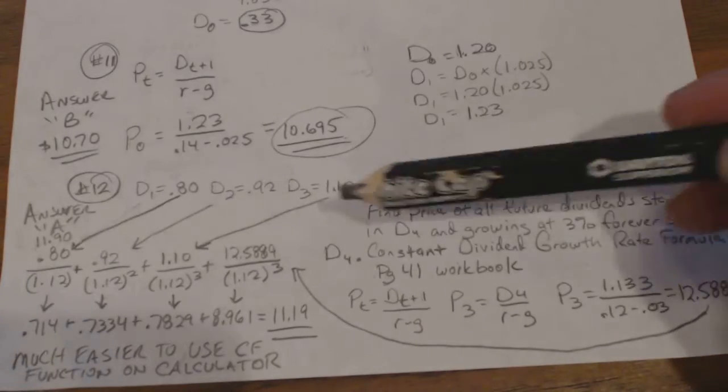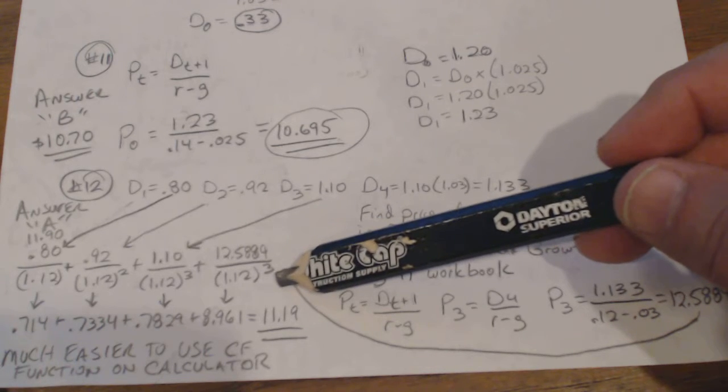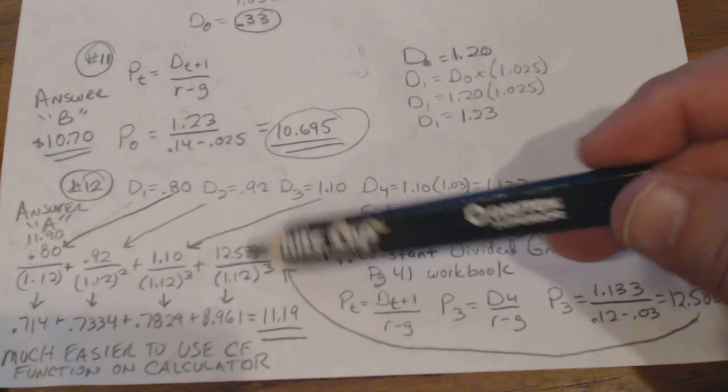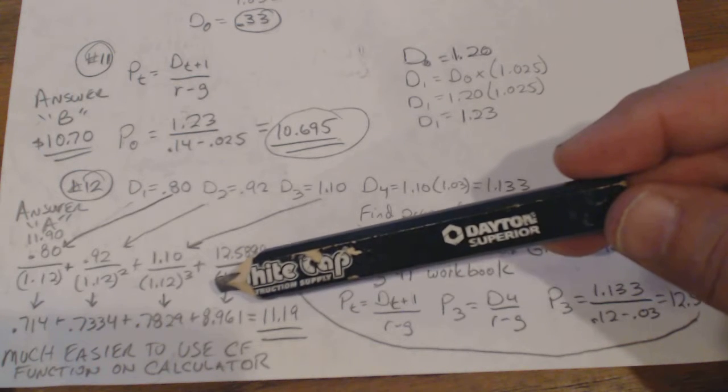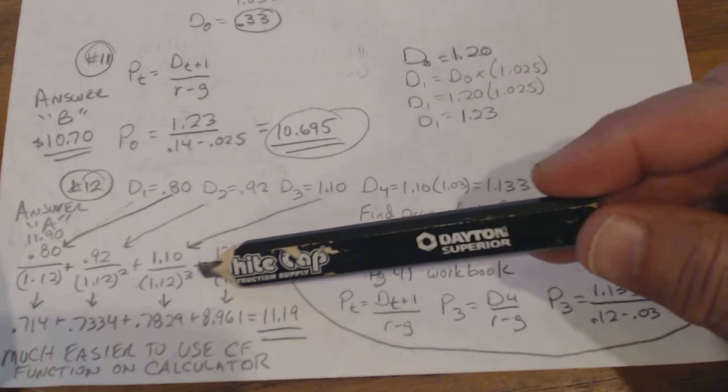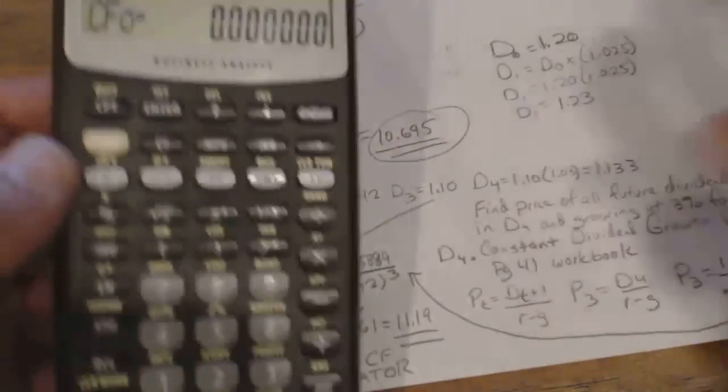The nice thing about that is you don't have to—these two you can just add together, the buck 10 and the 12.5889, because they're both being discounted from the third period. So instead of doing two separate calculations for these, because you want to put it in one cash flow for the third period, you just add these together and put it into one cash flow. So when you do the cash flow numbers, we'll do it right now.